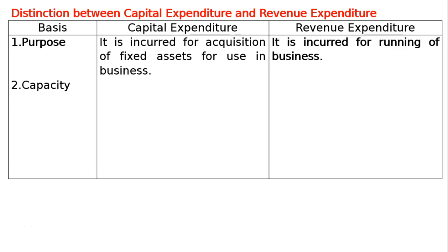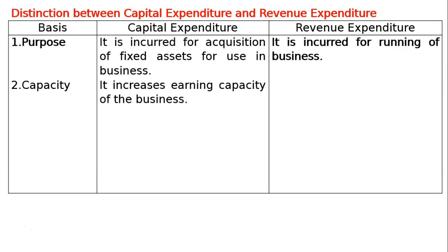The second basis of distinction is capacity. In case of capital expenditure, it increases the earning capacity of the business. Whereas, in case of revenue expenditure, it is incurred for earning profits — the capacity is to earn profits, not to increase the earning capacity of the business.